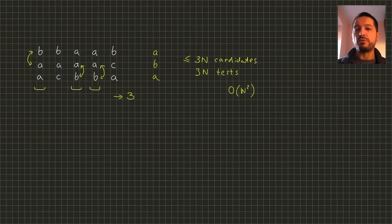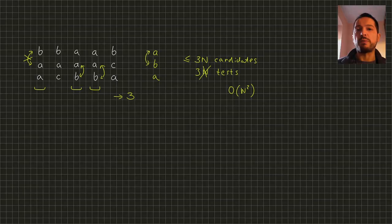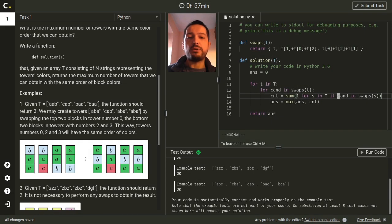Let's speed up the counting process for a fixed candidate. For each tower in the input we test whether we can swap it to obtain the candidate. But observe that this is the same as testing whether the candidate can be swapped to achieve a certain tower in the input. Therefore, for each of the three possibilities of swapping the candidate, we need to count how many towers of this kind are in the input, and this can be done with simple preprocessing using a hash map.